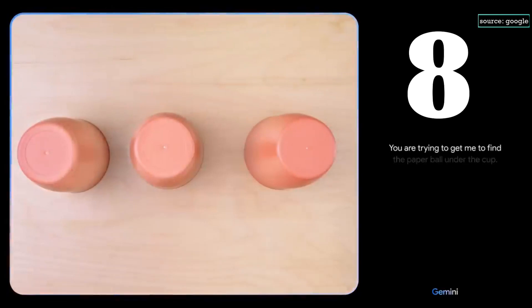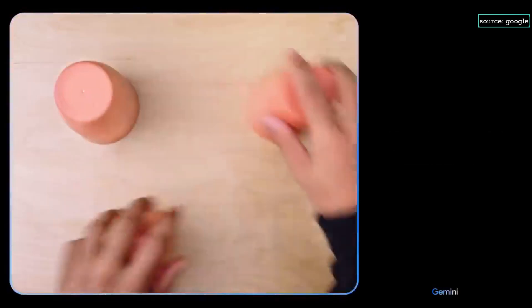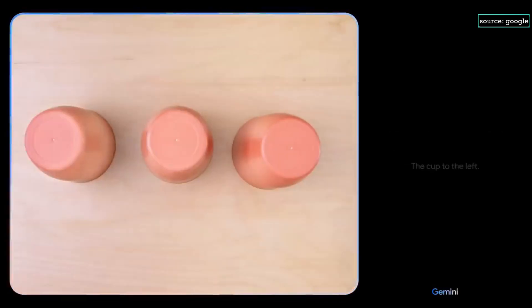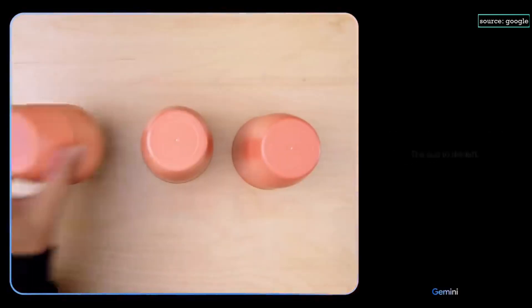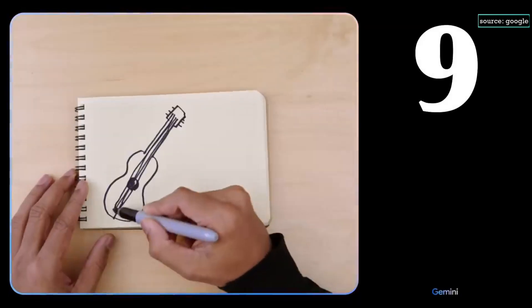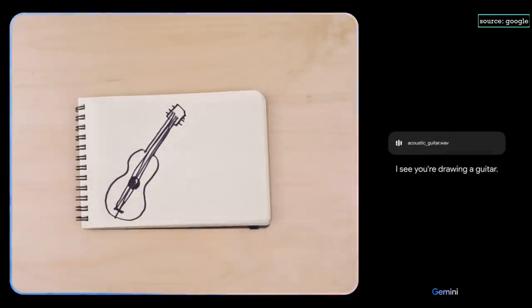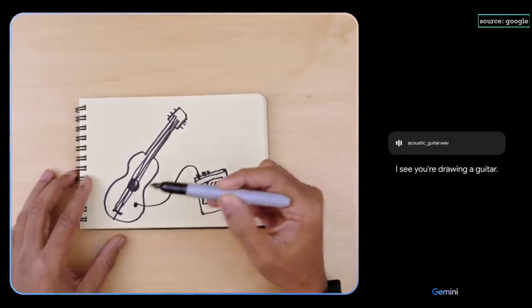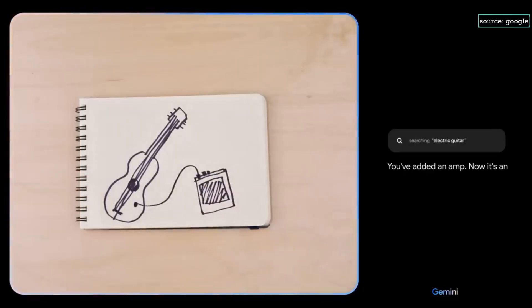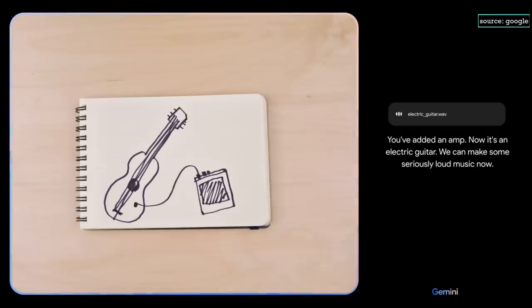You are trying to get me to find the paper ball under the cup. I accept the challenge. The cup to the left. Nice. I see you're drawing a guitar. You've added an amp. Now it's an electric guitar. We can make some seriously loud music now.